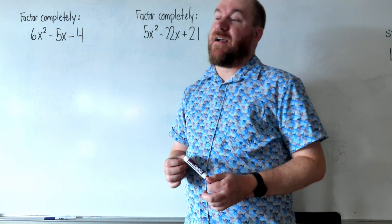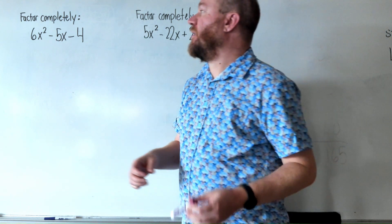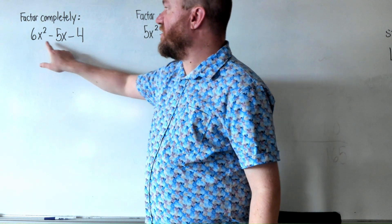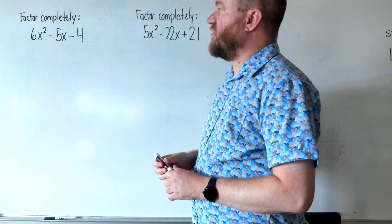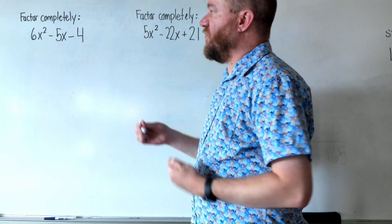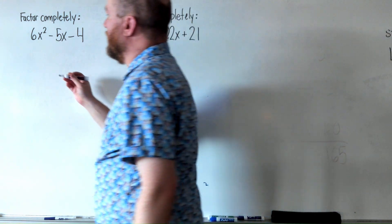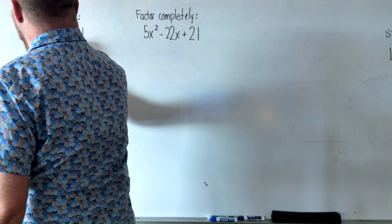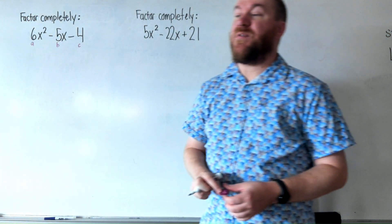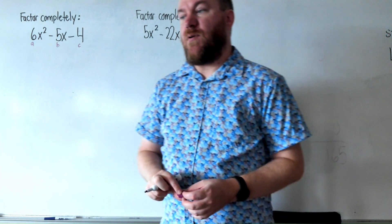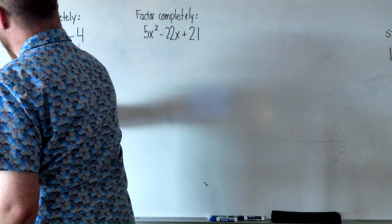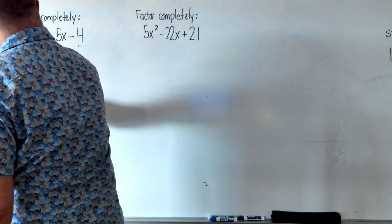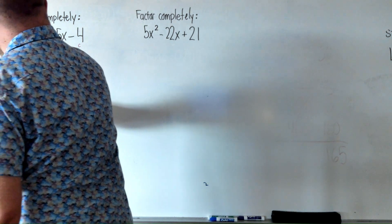So we're going to use something called factoring by grouping to solve these two problems here. Let's start with this one here, it says factor completely 6x² - 5x - 4. So what we're going to do is we're going to label those three numbers as a, b, and c. And when you factor trinomials in this form, over here in the margin, I'm going to write ac equals and b equals.